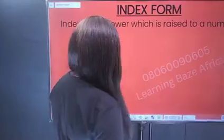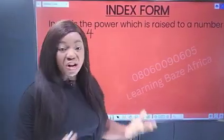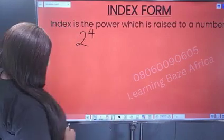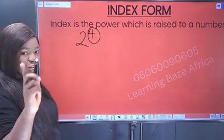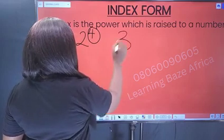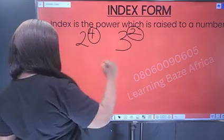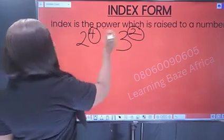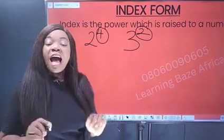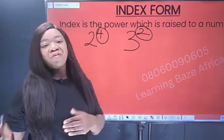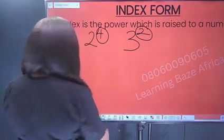Index is the power which is raised to a number. For example, in the number two raised to power four, four is the index. If you have three raised to power two, two is the index of that number. The plural of index is called indices, and today we'll be learning how to write series of numbers in index form.